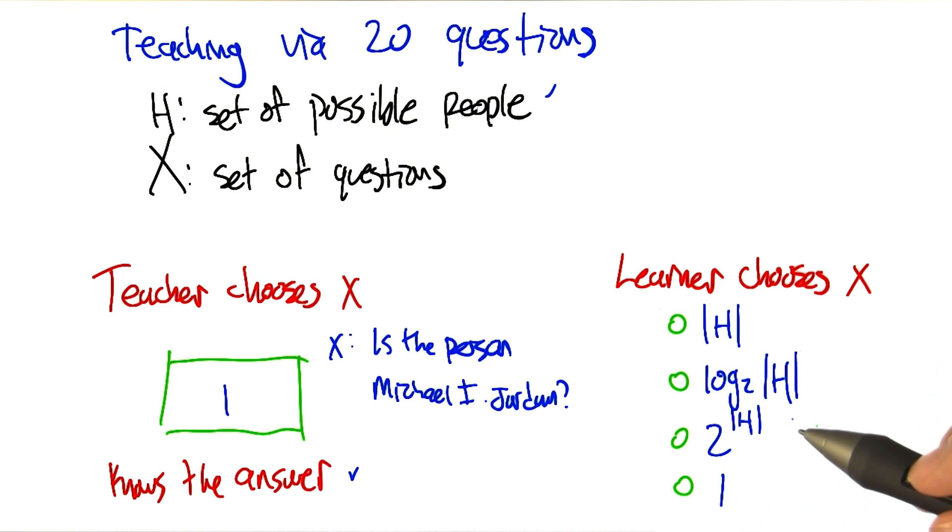Since there's lots of different ways that the person could be chosen, do we have to look at two to the number of people? Or again, can the learner be as powerful as the teacher and get the whole thing in just a single question?